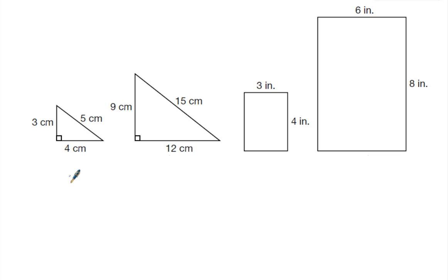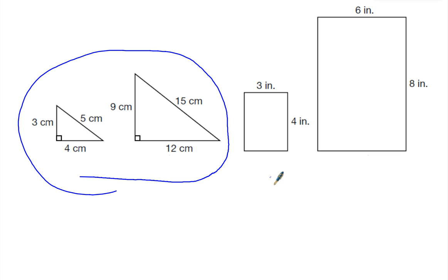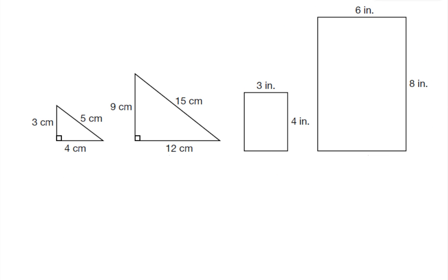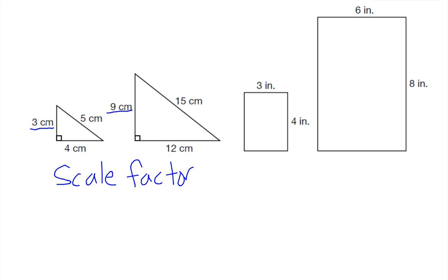So here I've got two triangles that are similar, and two rectangles. Now the difference between these is they have a scale factor. The scale factor tells me how much bigger or smaller one shape is than the other, and I can tell what that is by looking at the same side. So to get from 3 centimeters to 9 centimeters, or 5 to 15, or 4 to 12, I have to multiply those sides by 3. So the scale factor going from small to big is 3.